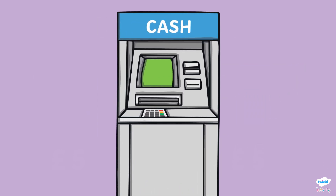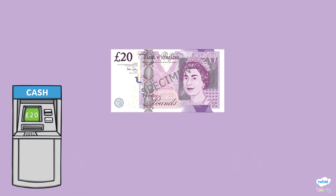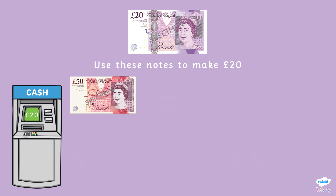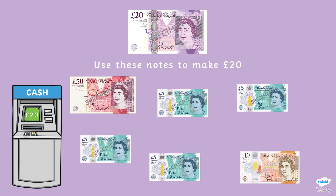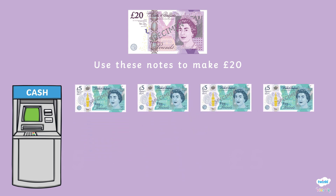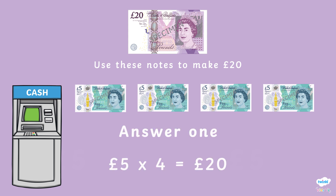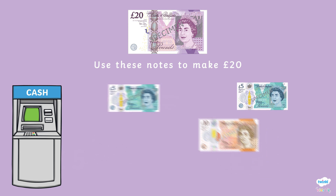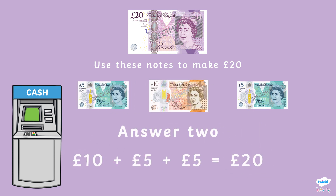How much is the cash machine giving away now? It's £20! Can you use these notes to make £20? We have £50, four £5 notes and a £10 note. We can't use the £50 note as that is worth more than £20. To make £20, we can use all four of the £5 notes, as this is the same as writing £5 times 4 which equals £20. Or we can use two £5 notes and a £10 note, as that is equivalent to £10 add £5 add £5 which equals £20.